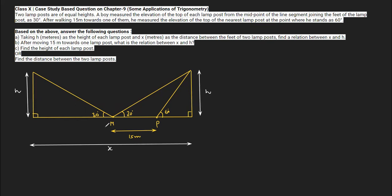Since M is the midpoint and the total distance between the two lampposts is x, the distance from the first lamppost to M and from the second lamppost to M are both equal to x by 2. So both distances BM and DM are x by 2.